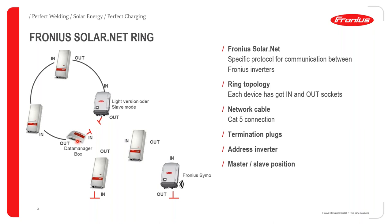For the device with the Data Manager — or Data Manager box — the cable goes out into the next device it's communicating with. From the out port, it goes to the in port of the next, continuing until the last device in the ring. Stop plugs go on the out port and the in port of the device with the Data Manager. Ensure that for the device with the Data Manager, it is in the master position, and all other devices are automatically in slave position.